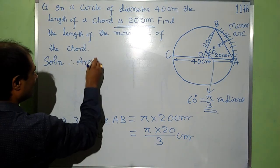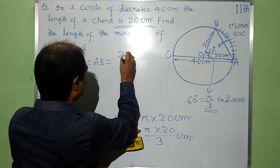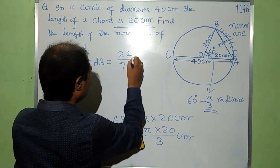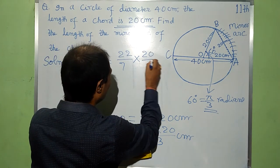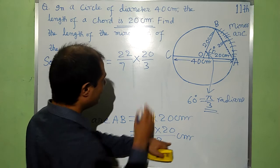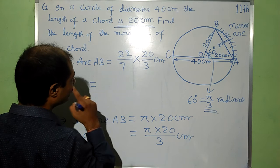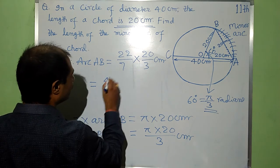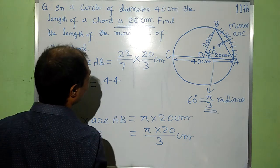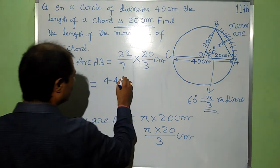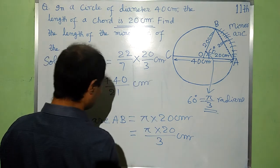Hence, arc AB is equal to value of pi, that is 22 by 7, into 20 by 3. And it is in cm, it is 440 by 21, this is in cm.